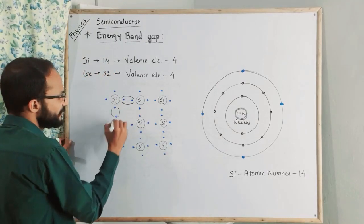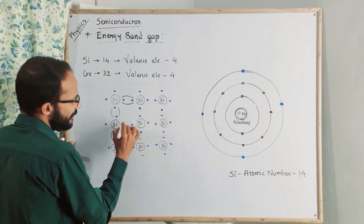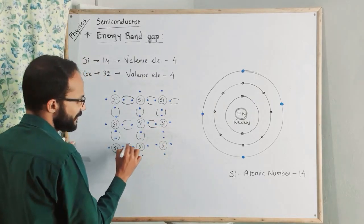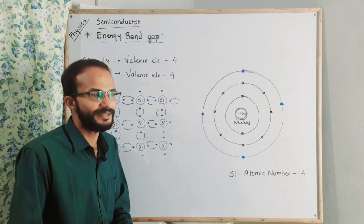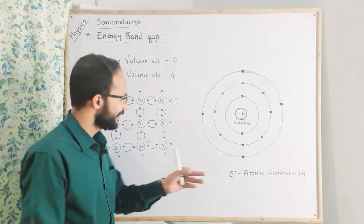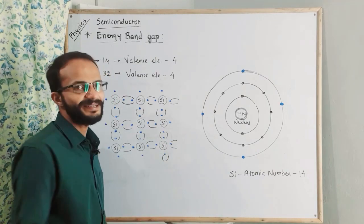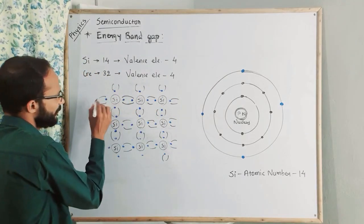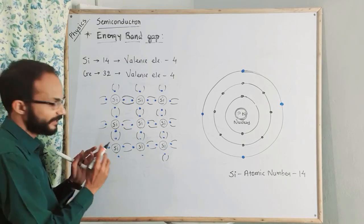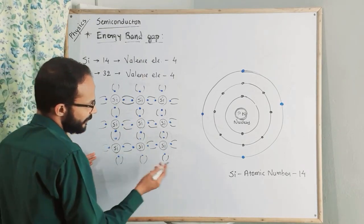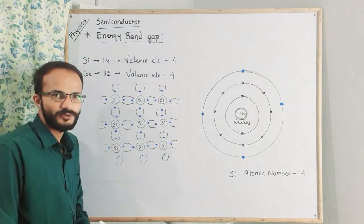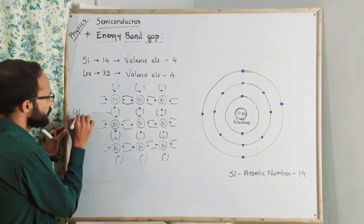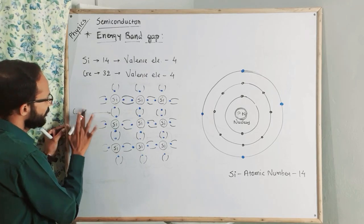All electrons are nearby — they form covalent bonds. If there is no free electron, then there is no current flow. Free electrons exist in metal, and therefore current will flow in metal. But here, at zero Kelvin, there is no free electron — all atoms are combined with each other through covalent bonds.